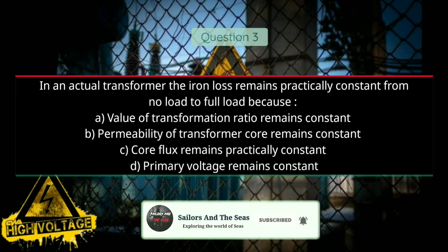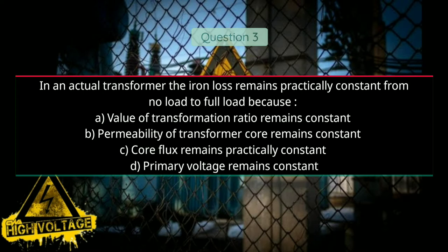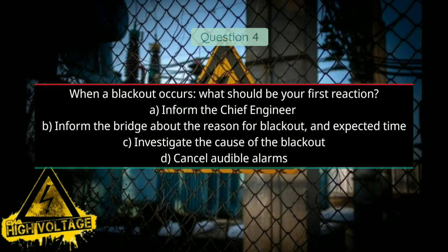Question number three: In an actual transformer, the iron loss remains practically constant from no load to full load because — Option A: value of transformation ratio remains constant, Option B: permeability of transformer core remains constant, Option C: core flux remains practically constant, and Option D: primary voltage remains constant. Correct answer is C, core flux remains practically constant.